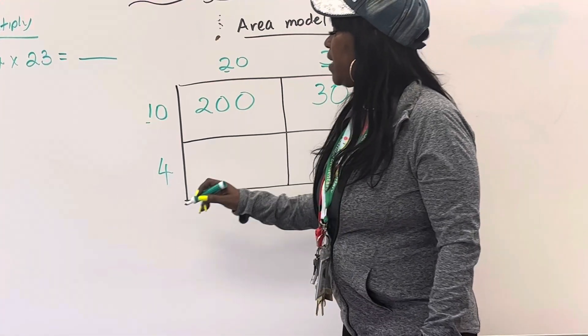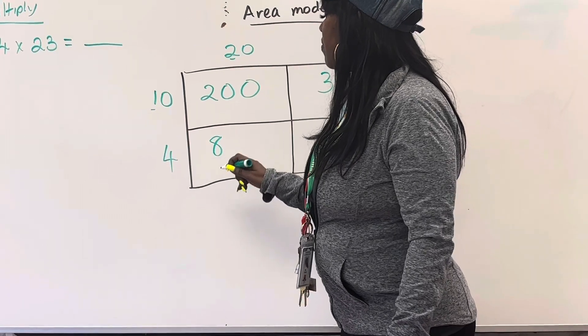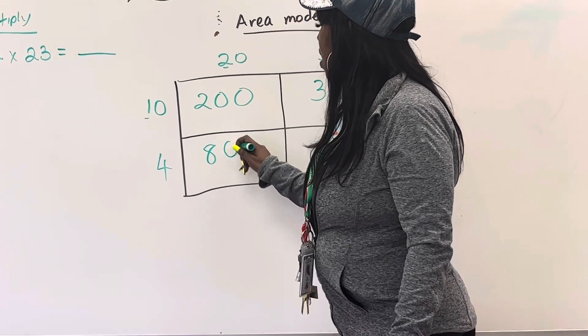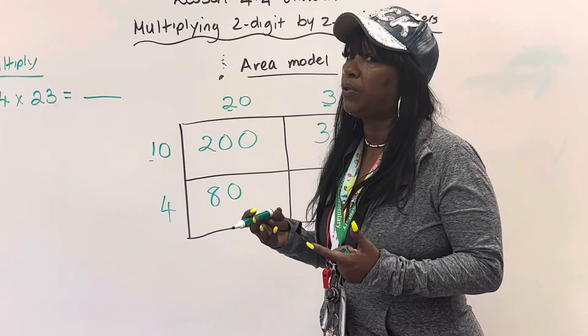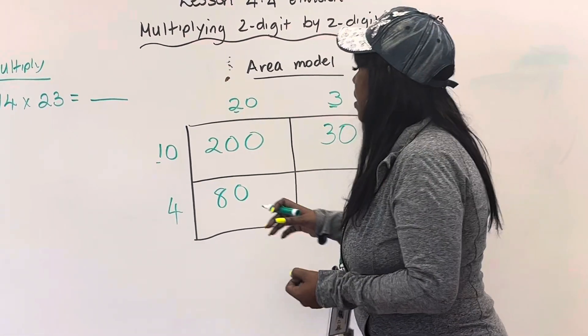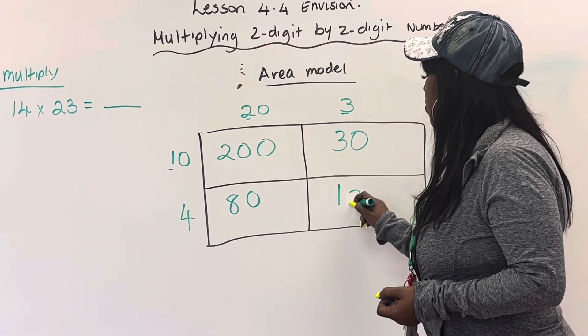Now we're going to go down to the 4. What is 4 times 2? 8. How many zeros left over? 1. Right over here. Don't forget. Always look around. Don't put 2 if there's not 2. What is 4 times 3? 12. Is there any zeros? No.